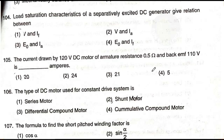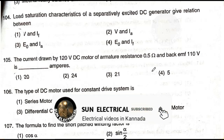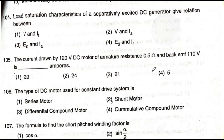Question number 105: The current drawn by a 120-volt DC motor with armature resistance 0.5 ohm and back EMF 110 volts. The voltage difference is 10 volts. The answer is option one — 20 amperes. The current drawn is calculated from the supply voltage minus back EMF divided by armature resistance.